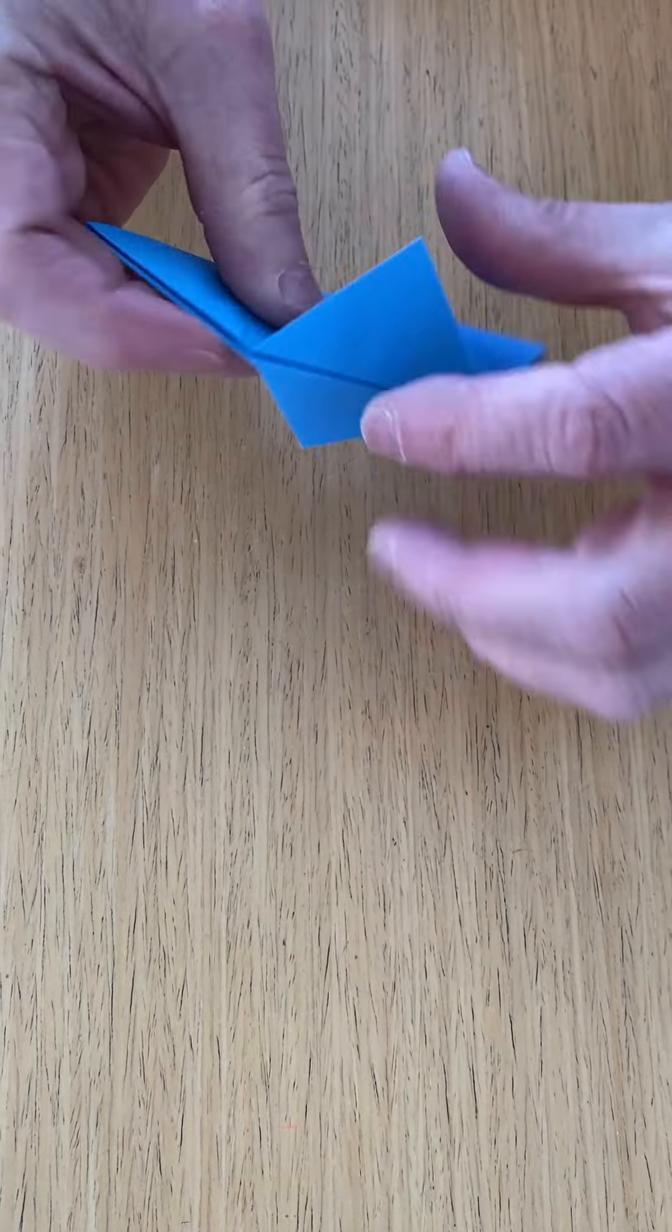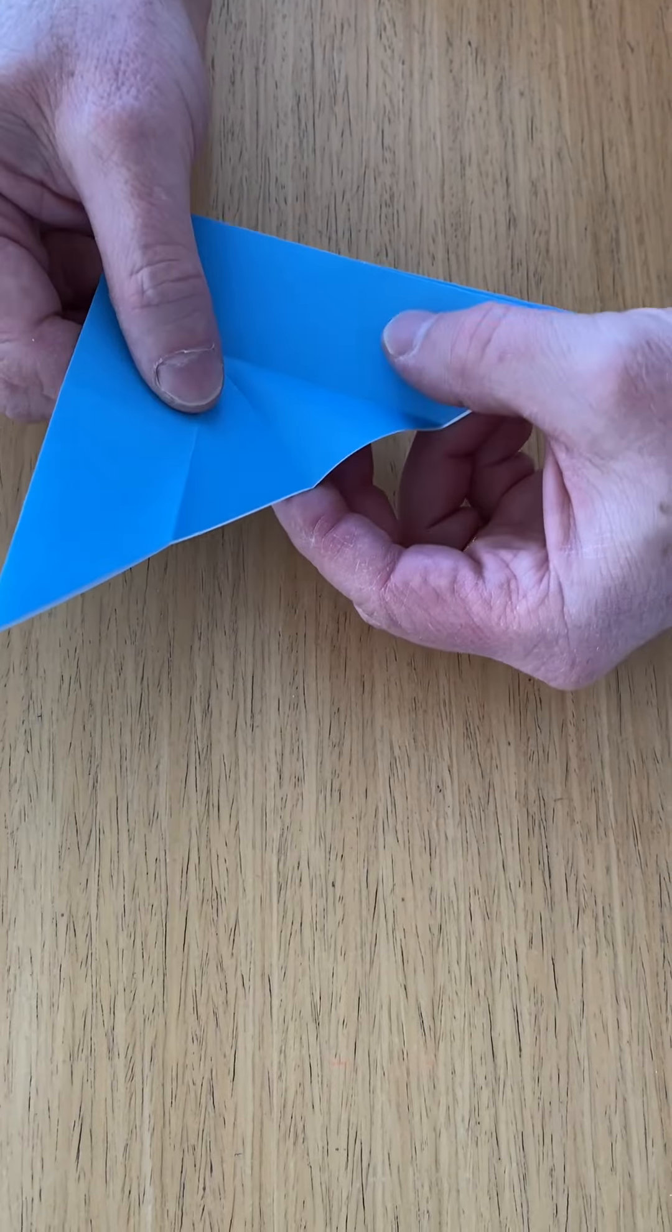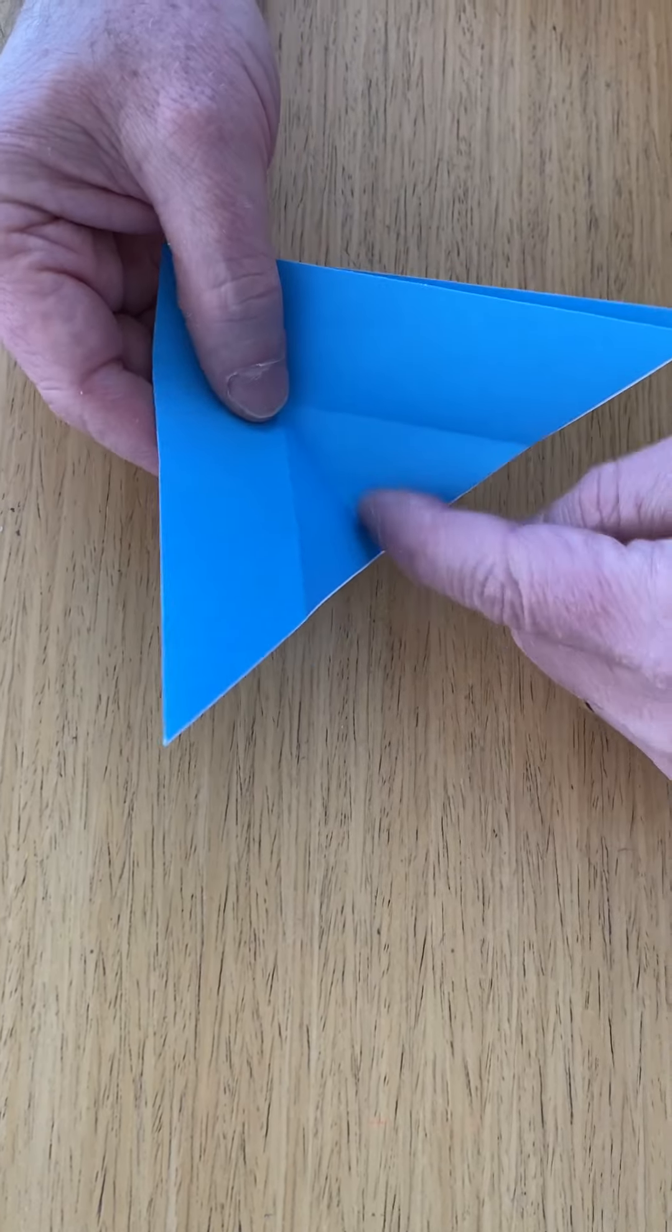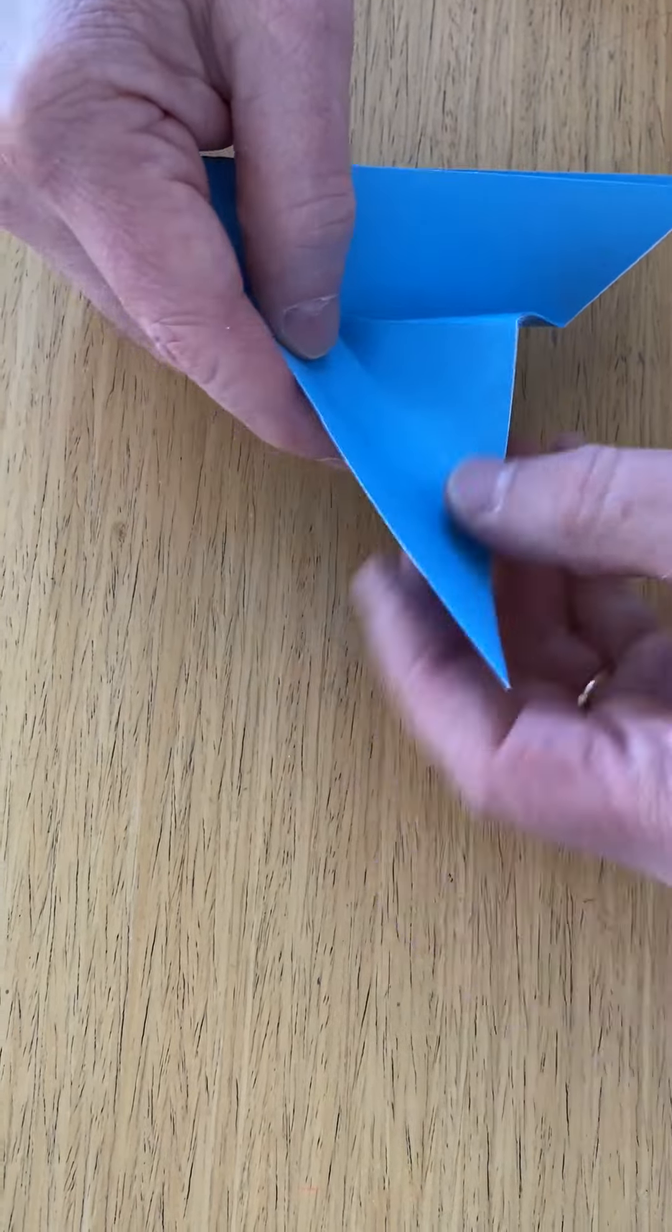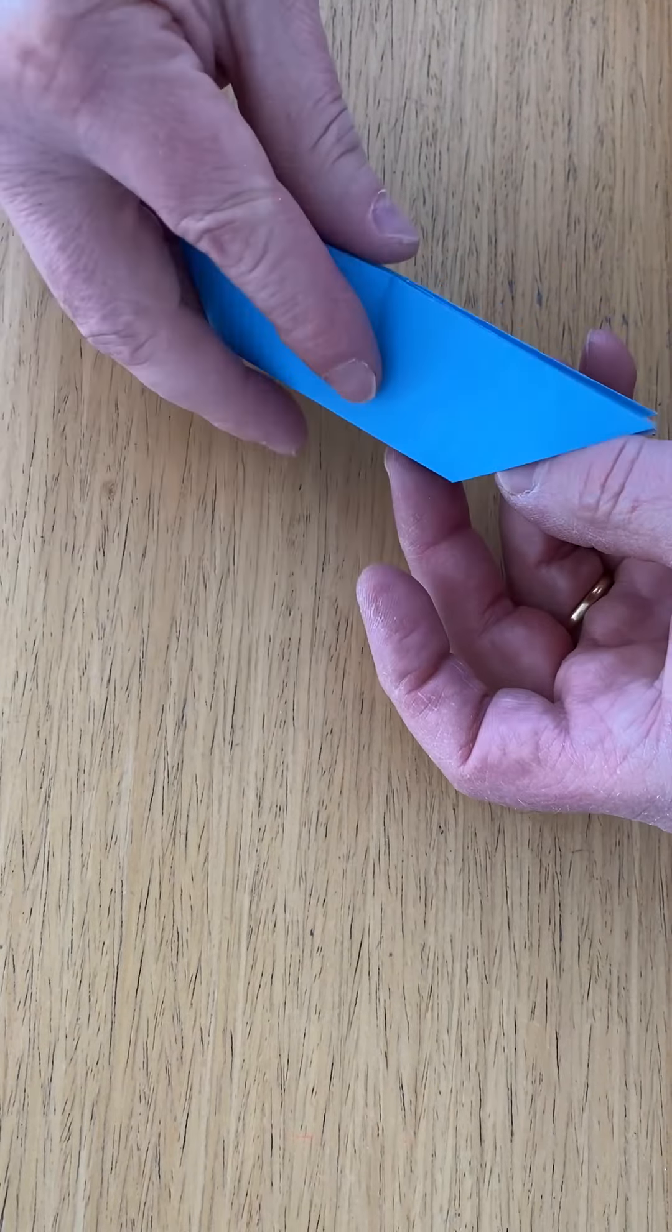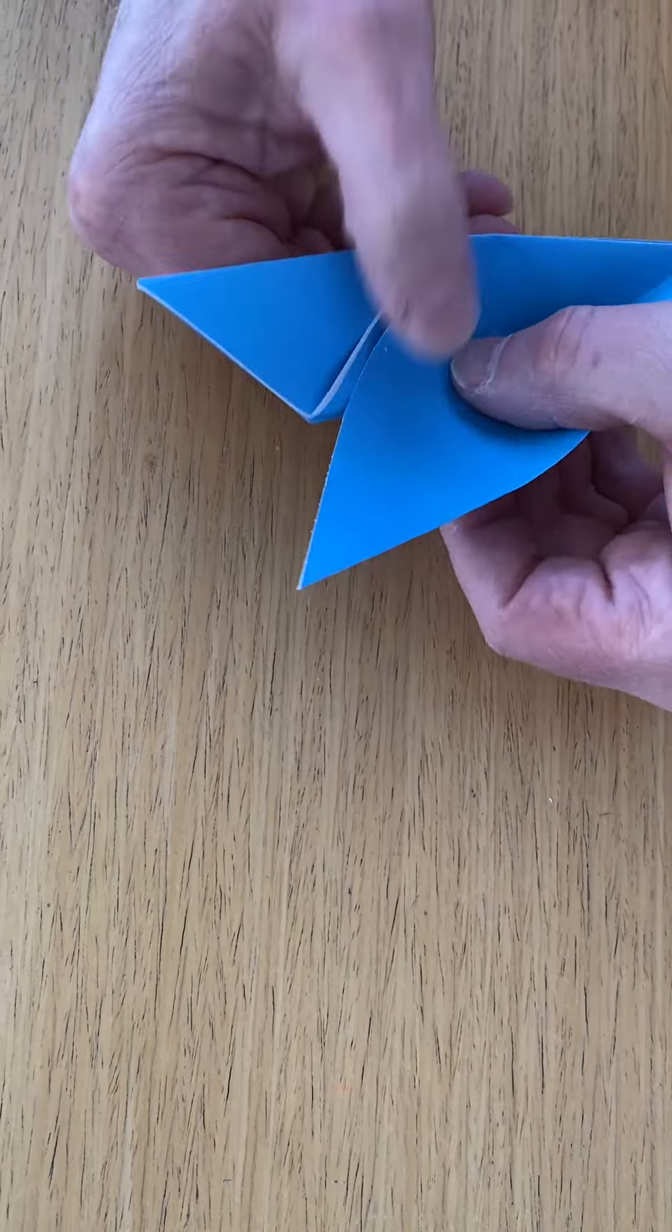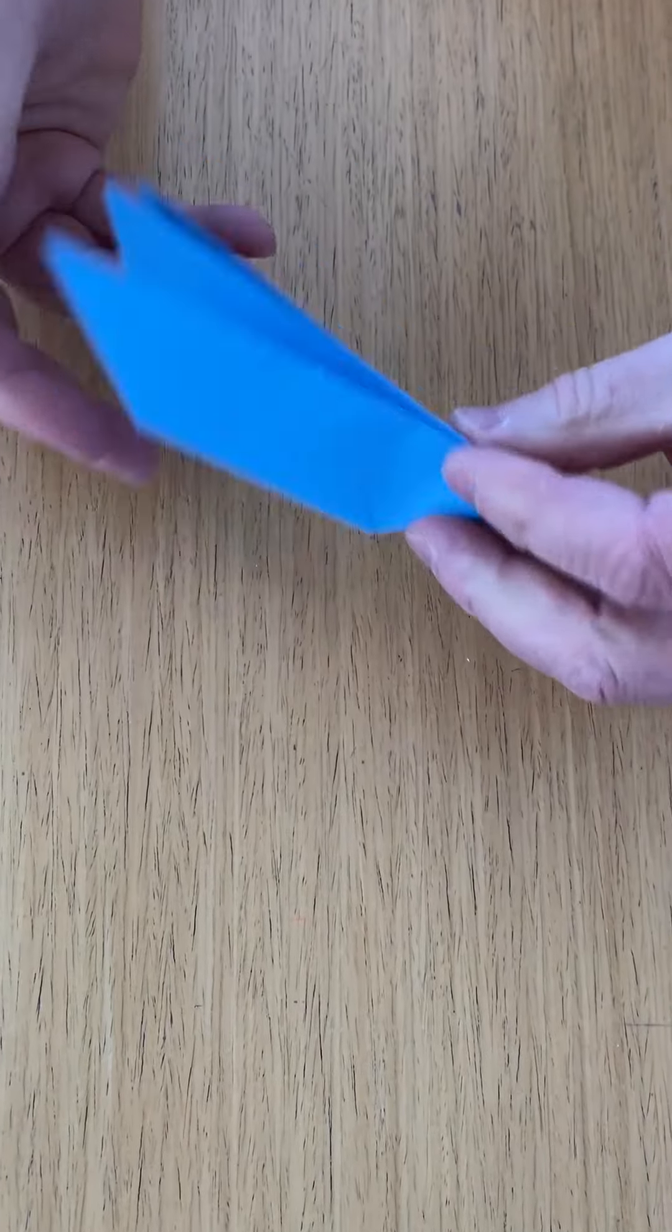And now we're going to take these two triangular flaps. We're going to open that up. And now we're going to do an inside reverse crease. We're not doing any new creases, but we're taking this crease that is a valley fold. You see, we're making it into a mountain fold. And we're doing that the same with this other fold. So it now looks like this. Now we go to the other side. We open it up and we fold this, we reverse this and we reverse this. So here's the model so far.